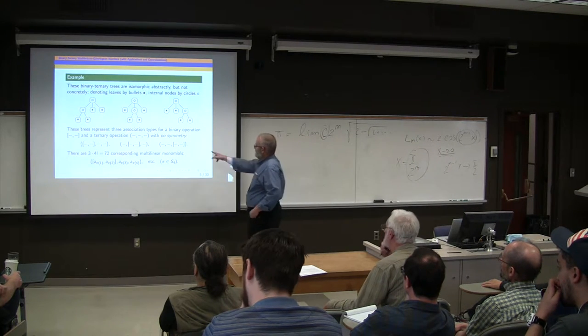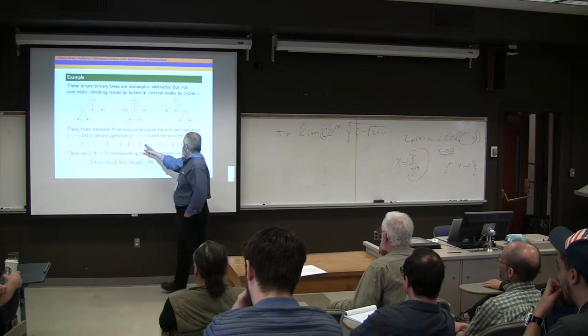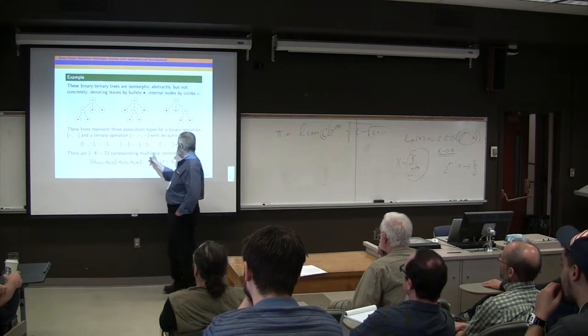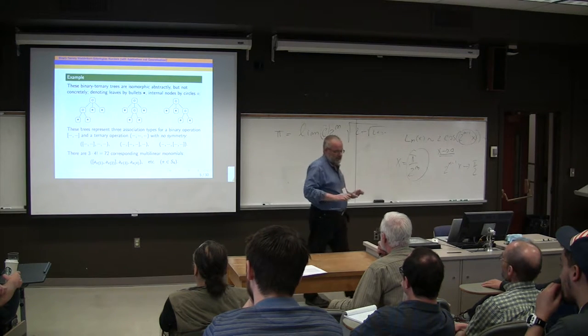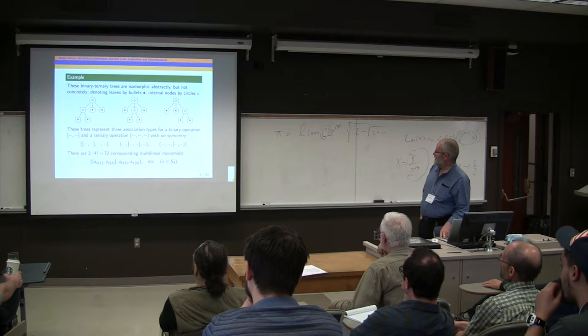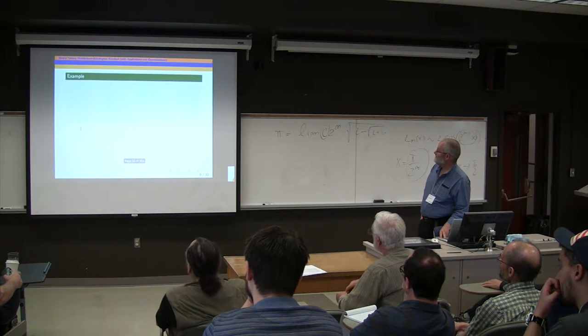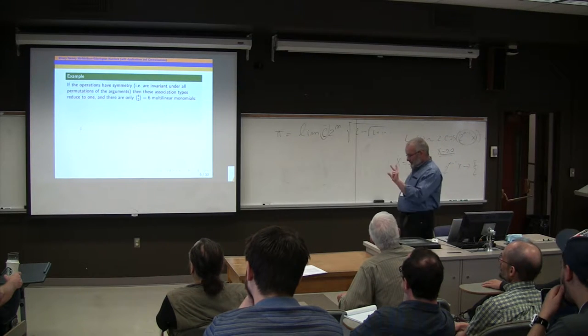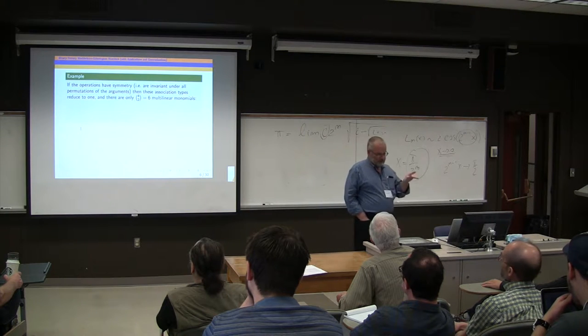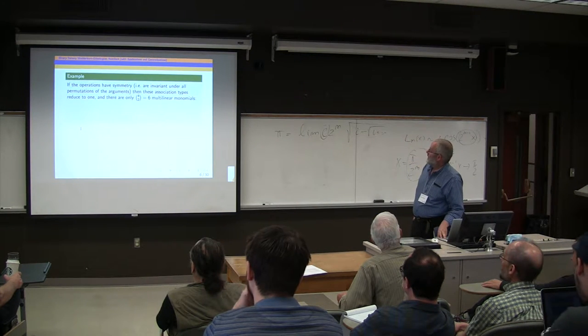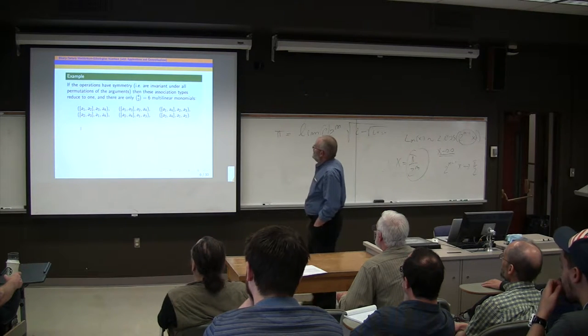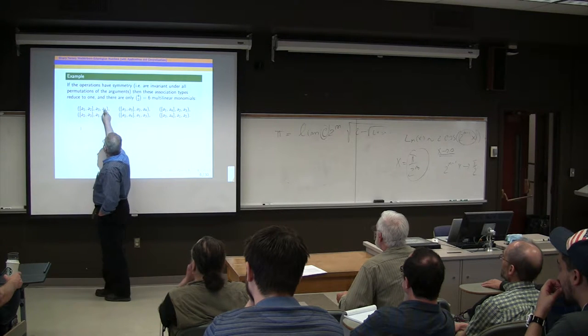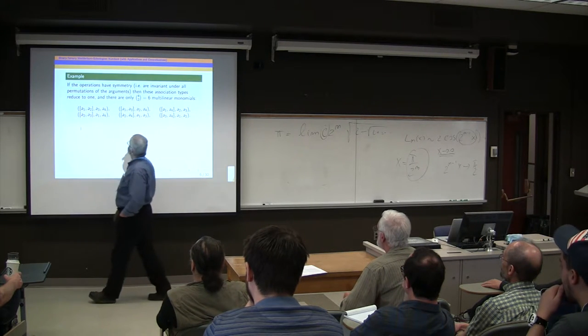These would be three distinct association types. No symmetry corresponds to the ordinary Catalan numbers. And so if you want to look at multilinear monomials here, each of these three distinct association types allows all four factorial permutations of the arguments, because we're assuming no symmetry of the operations. And so we get 72 multilinear monomials. Now what if the operations have symmetry? What if the binary operation is commutative and the ternary operation is also commutative?